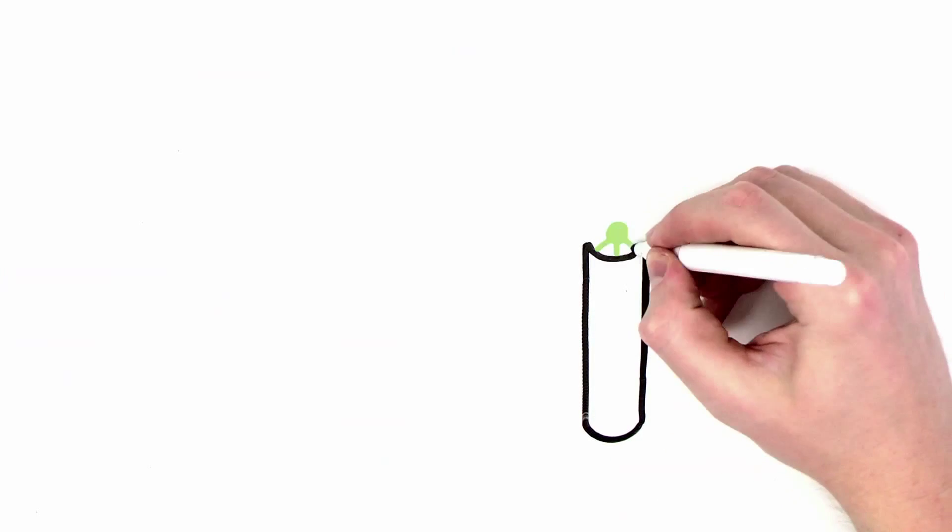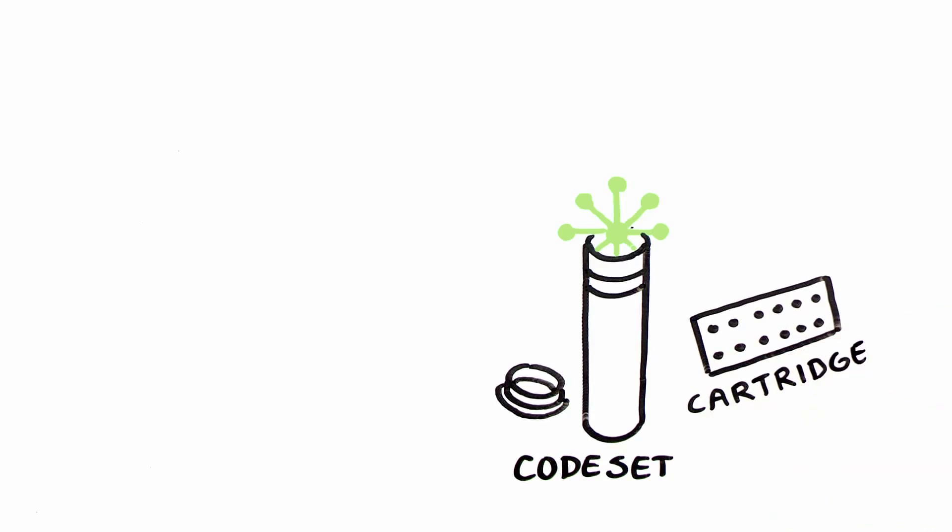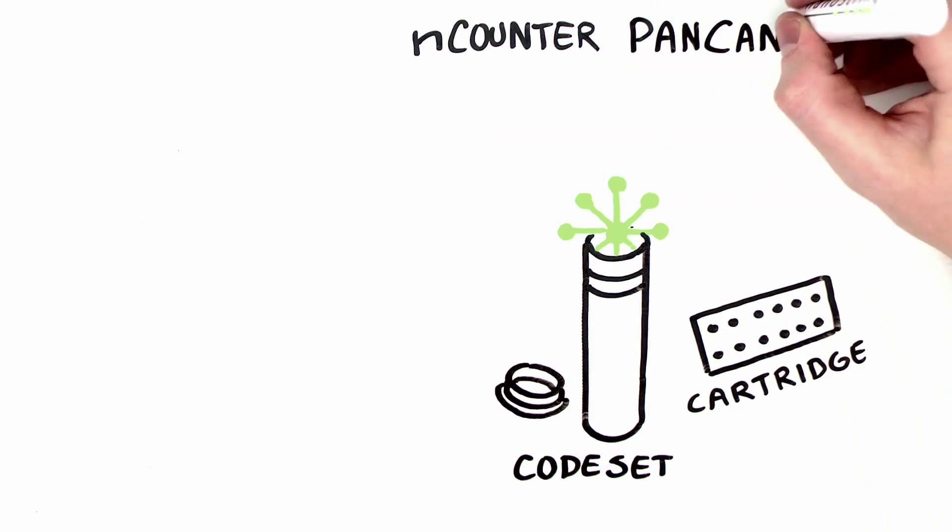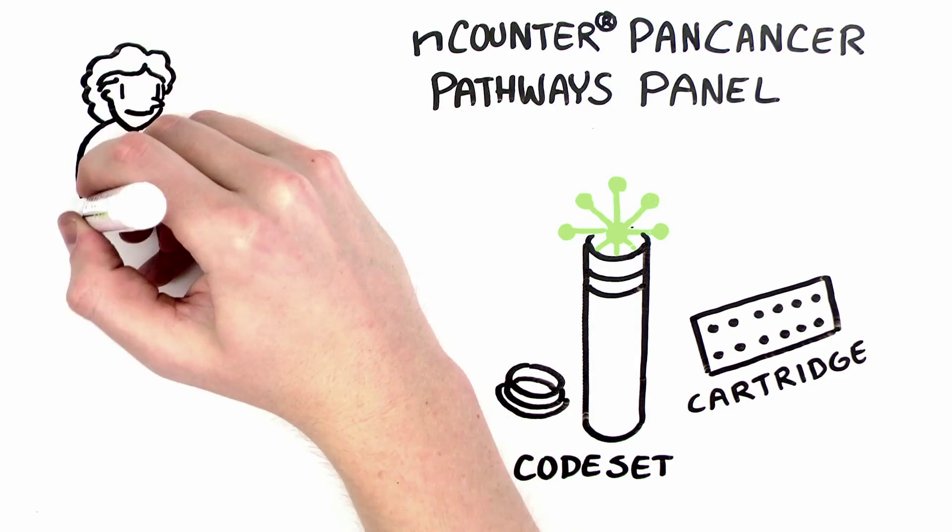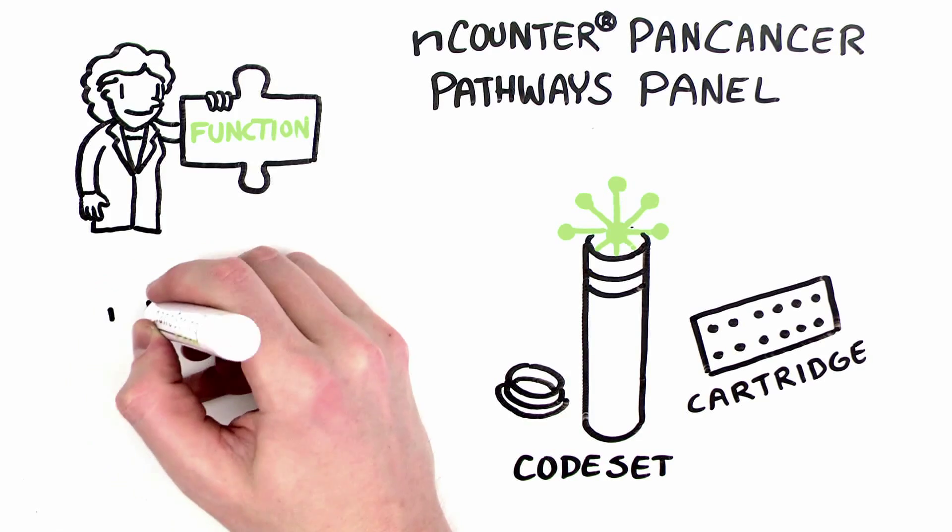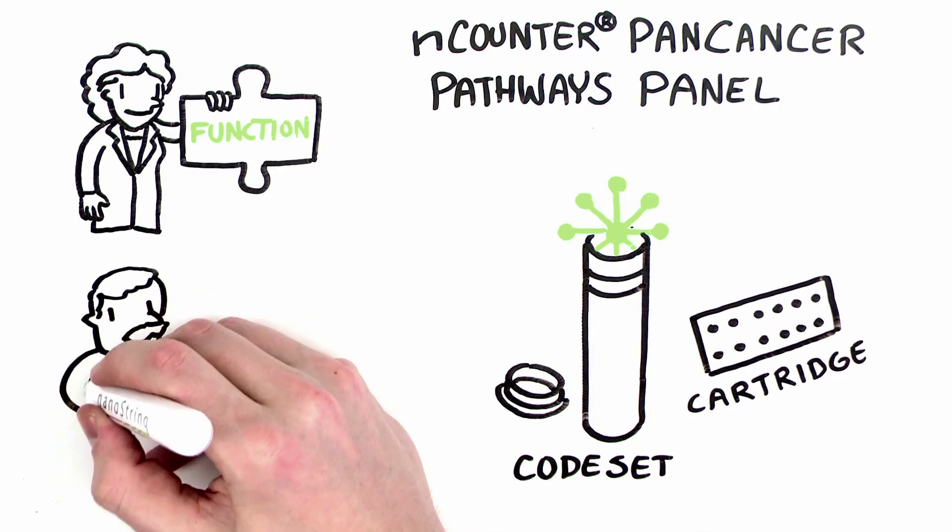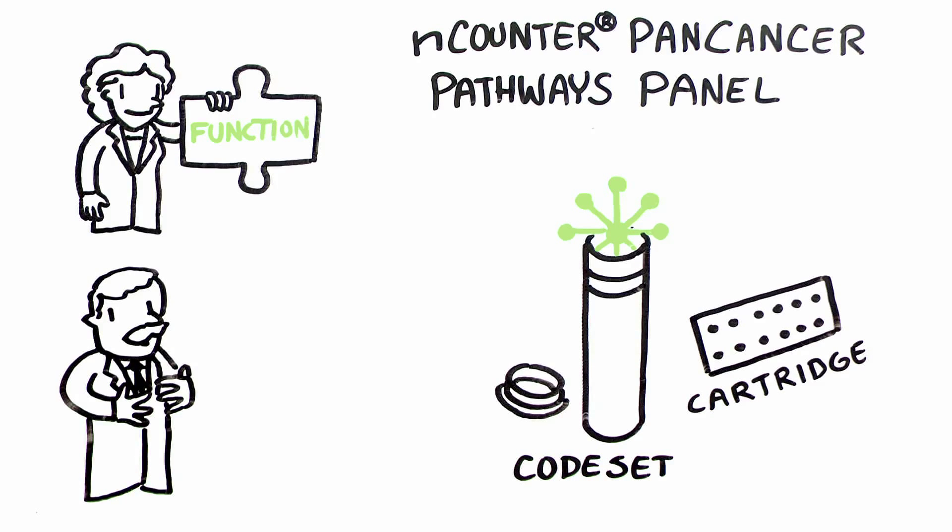We at NanoString are excited to share the Encounter Pan Cancer Pathways Panel with all of you. The Encounter Pan Cancer Pathways Panel merges past and present knowledge of cancer with functional genomics capabilities to better understand the molecular foundation of cancer. Simply put, we study the facts to bring to scientists a novel collection of over 700 essential genes representing all major cancer pathways to explore gene expression in a new way.